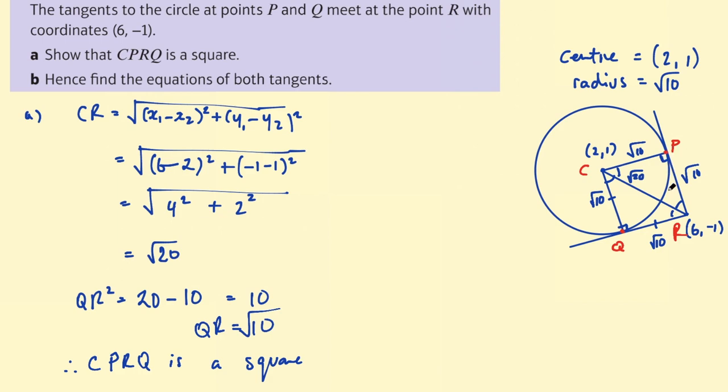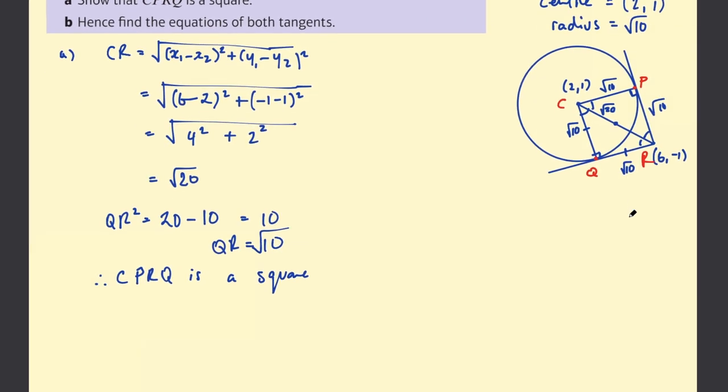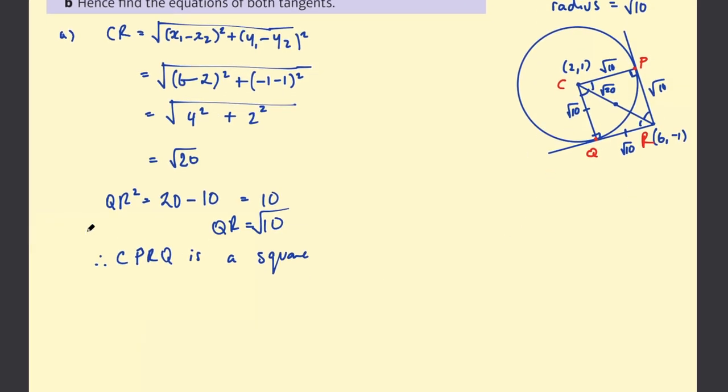So how can we find the points Q and P? The key thing you need to see here is to find the midpoint of CR. If you find the midpoint of CR that's also going to be the midpoint of QP. It's a little tricky detail. Might take you a while to see if you haven't done this type of question before.